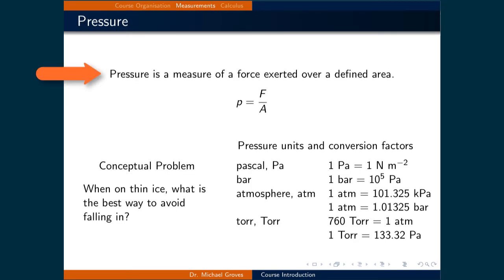Pressure is a measure of a force exerted over a defined area. There are two ways to increase the pressure, being increase the force, or decrease the area that the force is applied over. This idea is important in many places, and the conceptual example below illustrates one instance. If you find yourself on thin ice, what is the best way to avoid falling in? It would be to reduce the pressure of your weight on any one spot of the ice to avoid damaging it.